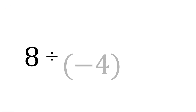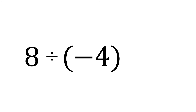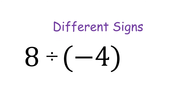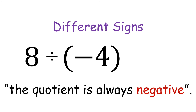Next, positive 8 divided by negative 4 — they have different signs, so the quotient is always negative. Positive 8 divided by negative 4 is 2, and it is negative.